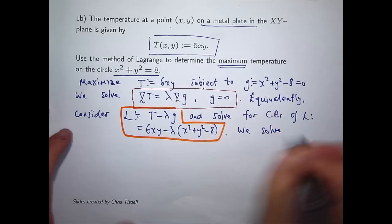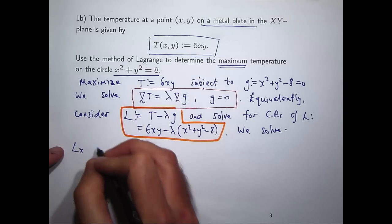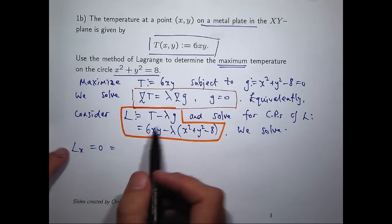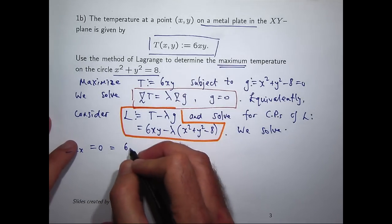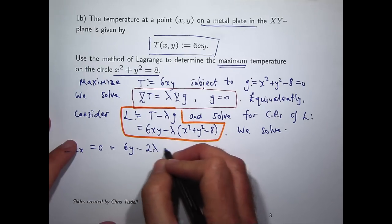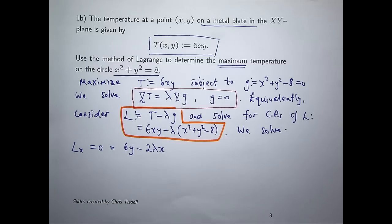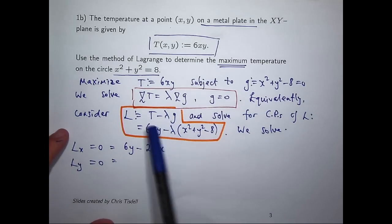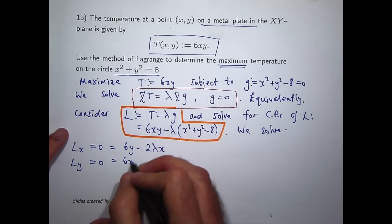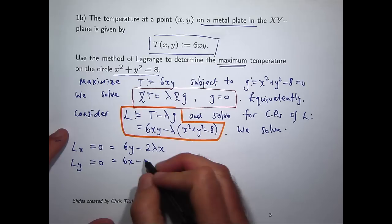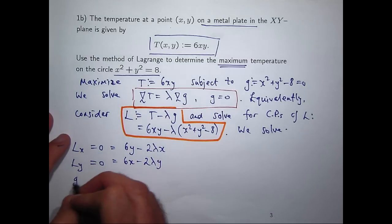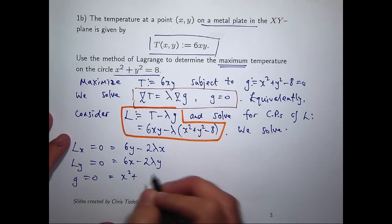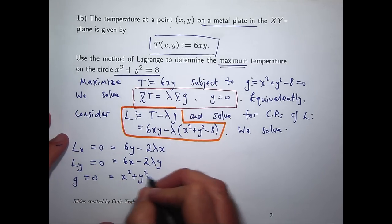So we're going to solve the following: dL/dx—let's differentiate this with respect to x holding all the other variables fixed, so I'm going to get 6y and I'm going to get minus 2 lambda x. If I calculate dL/dy, well I'm going to get 6x from this term and I'm going to get minus 2 lambda y from the second part. And remember, g equals zero, which is just x squared plus y squared minus 8 equals zero.